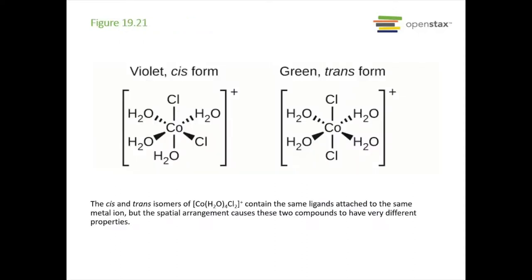Here's an example: a cis and trans form of this cobalt-water complex. Looking at it, they look almost the same, but the connectivity is actually different — you cannot rotate things so that the water and chlorine end up in the same spot. You can't superimpose them. This difference changes the color: violet versus green.